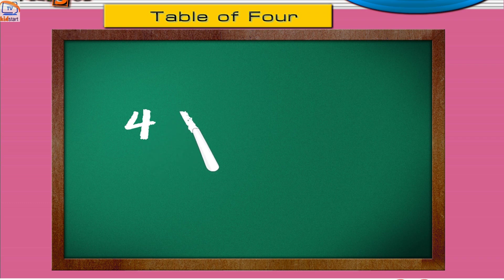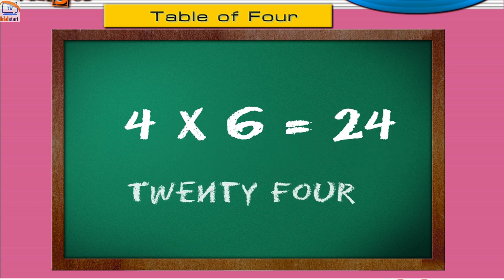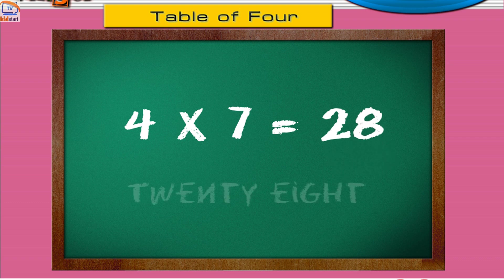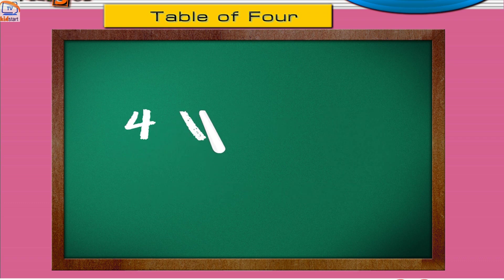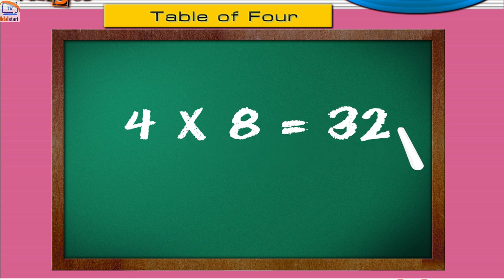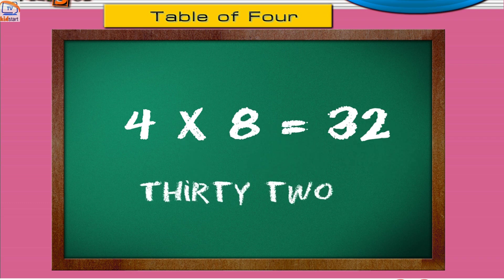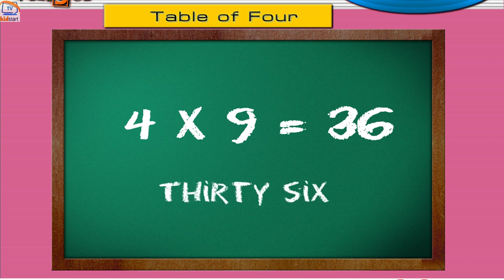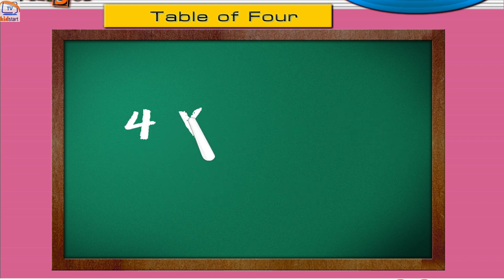Four sixes are twenty-four. Four sevens are twenty-eight. Four eights are thirty-two. Four nines are thirty-six. Four tens are forty.